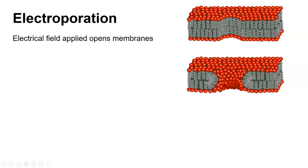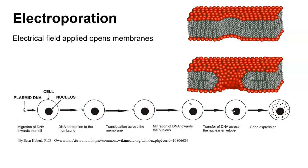In electroporation an electrical field is applied to the cells that creates little holes in the walls in the membrane, then DNA from another source can get in.